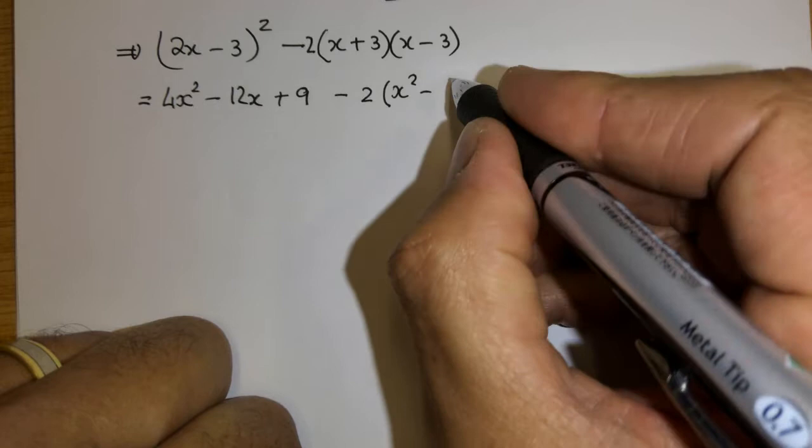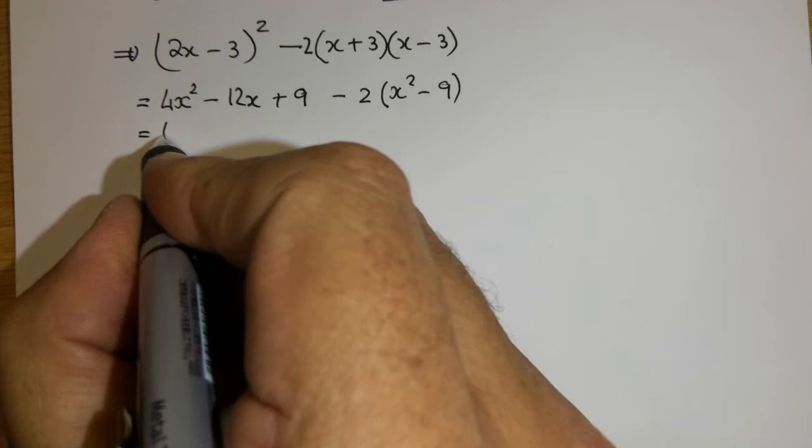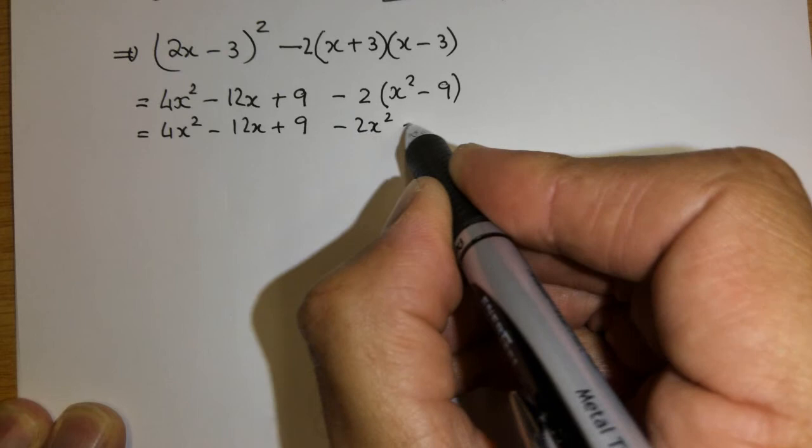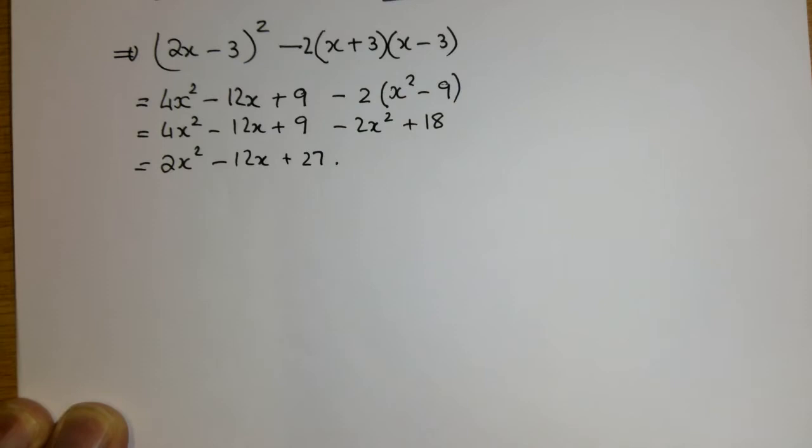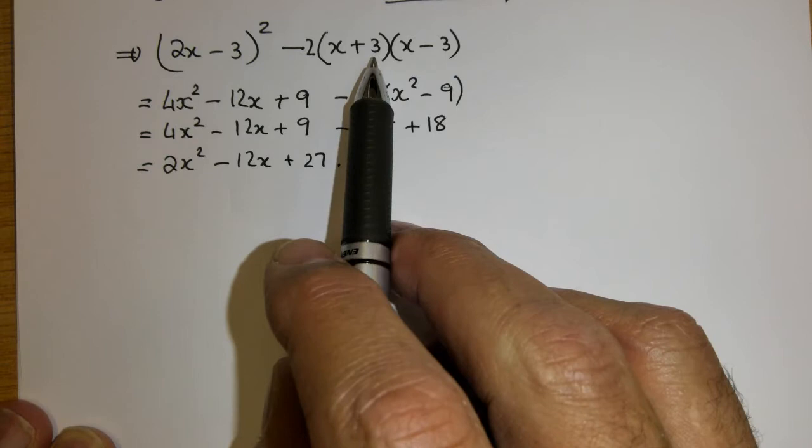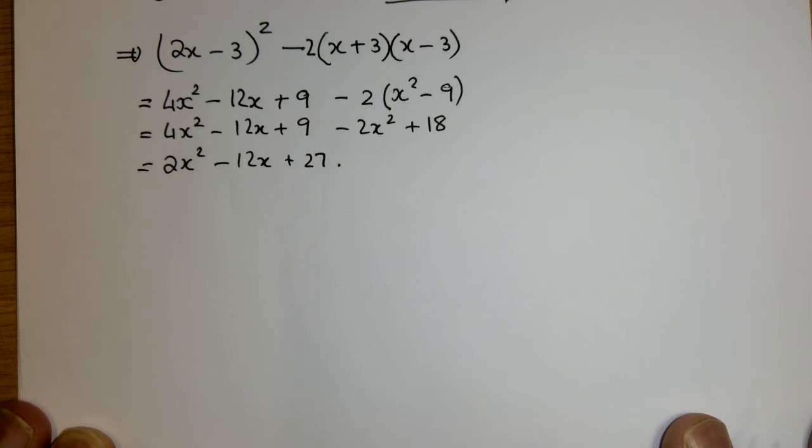It's x squared minus 3 squared, which is 9. Now we can take the 2 in. So we get 4x squared minus 12x plus 9 minus 2x squared plus 18. And that gives me 2x squared minus 12x. 9 and 18 together gives you a 27. I think that is beautiful. Look at what it looked like over there and look at what it reduced to. It's reduced to this quadratic trinomial when we multiplied them.